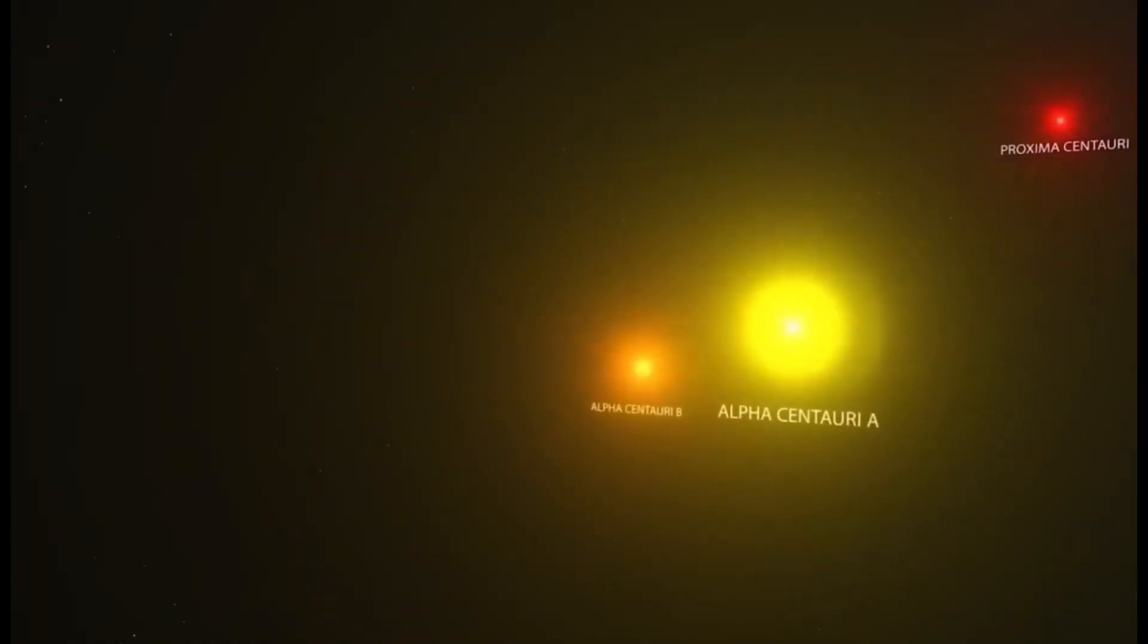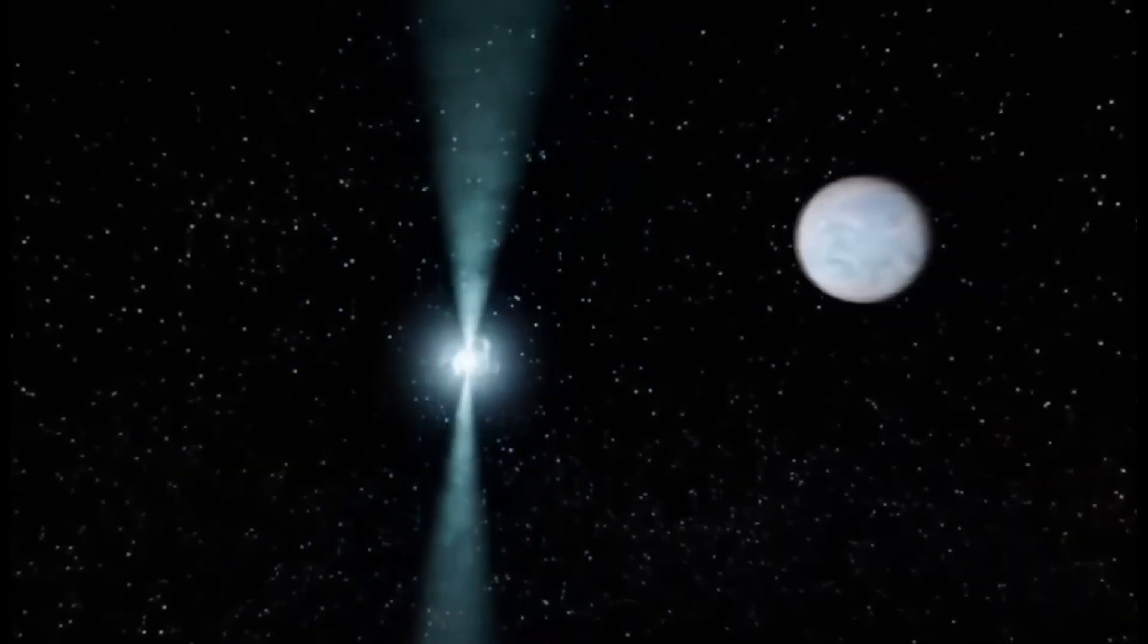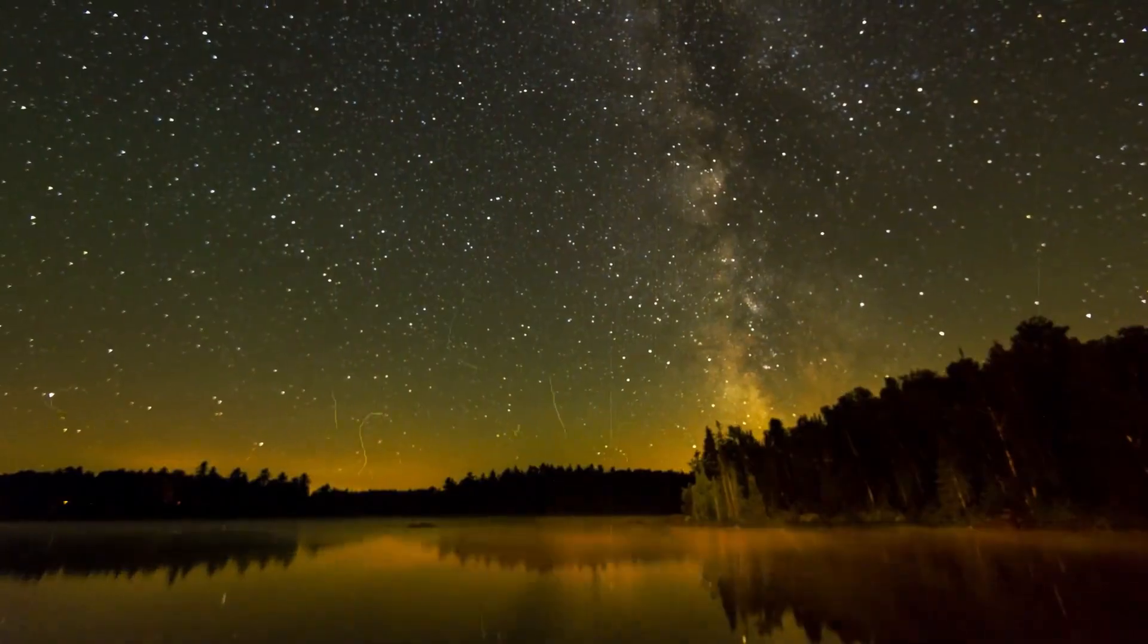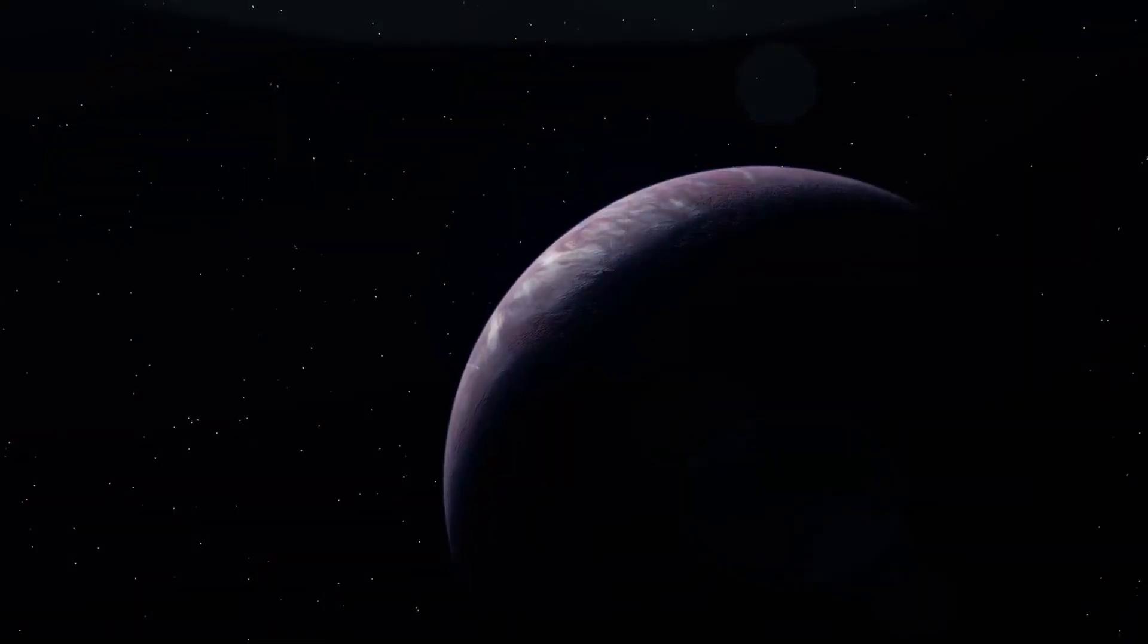Despite being the closest Earth-like exoplanet, Proxima B is unreachable for humans anytime soon, as exploring it with current technology would take millennia. It doesn't transit directly in front of Proxima Centauri, making its path difficult to determine.